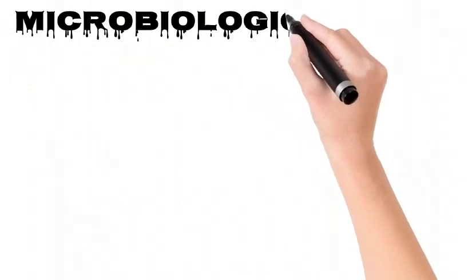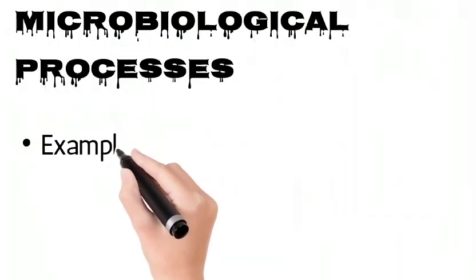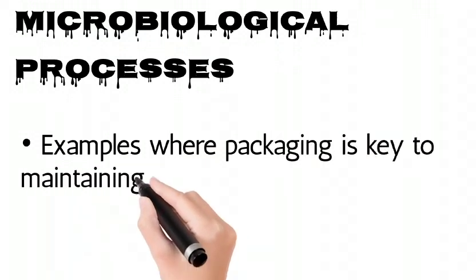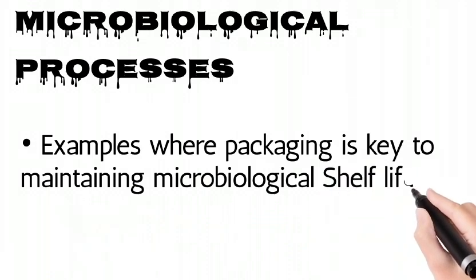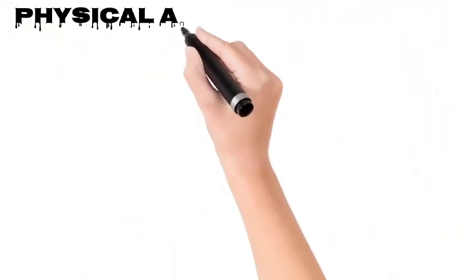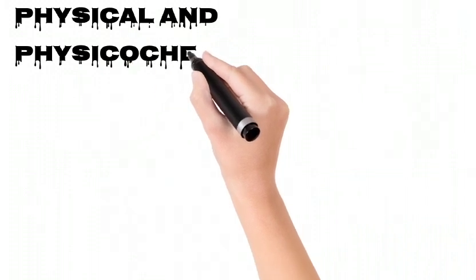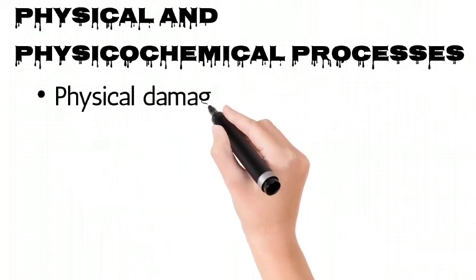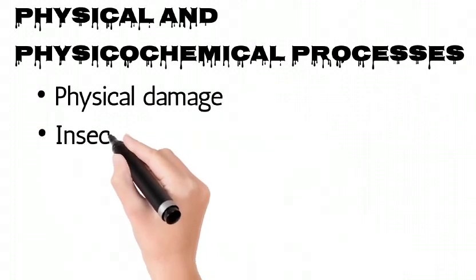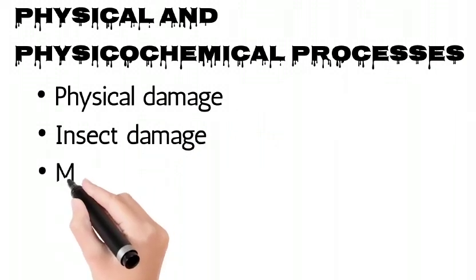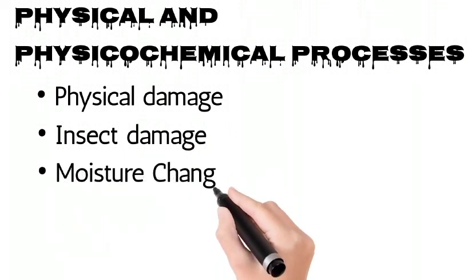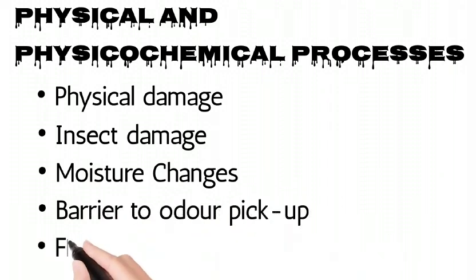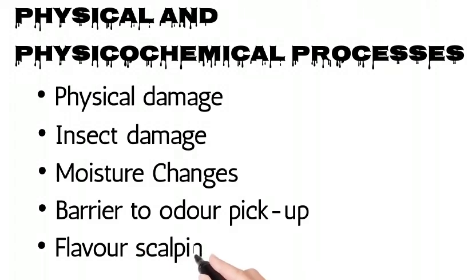Microbiological processes — examples where packaging is key to maintaining microbiological shelf life. Physical and physicochemical processes include: point one, physical damage; point two, insect damage; point three, moisture change; point four, barrier to odor pickup; and point five, flavor scalping.